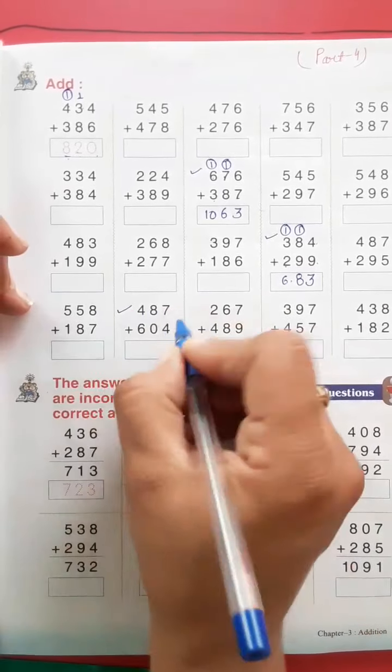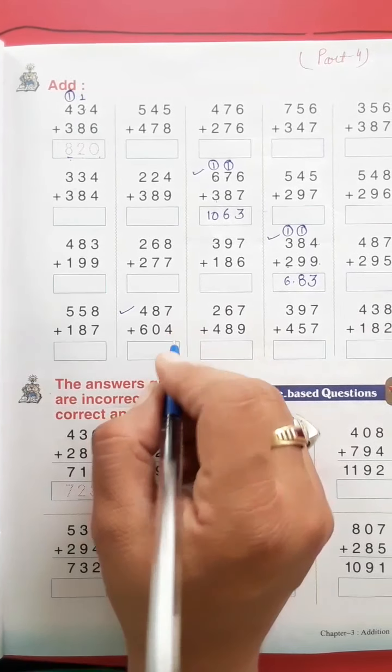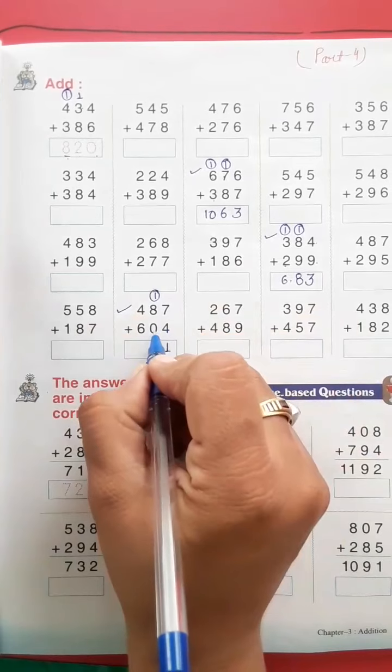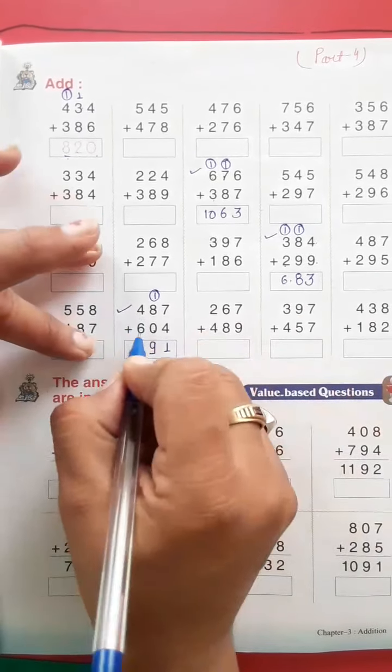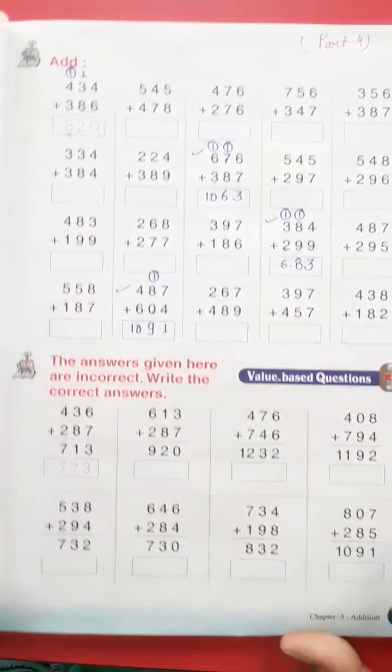One sum more. Seven and four is 11, 1 carry 1. Eight and zero is eight, plus 1 is nine. Four and six is ten. Remaining you have to do in homework.